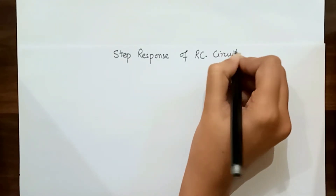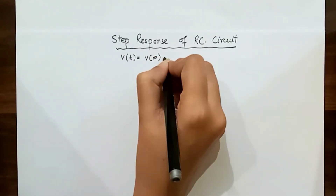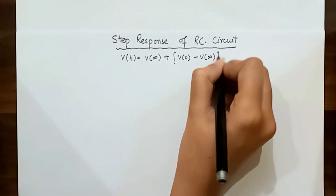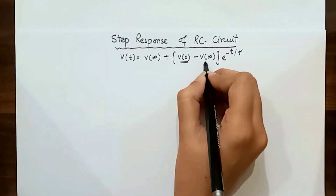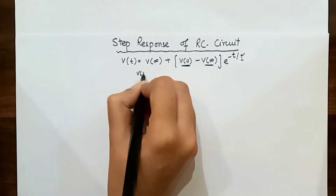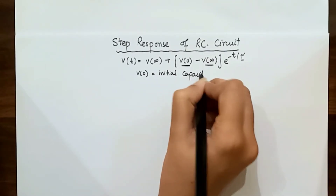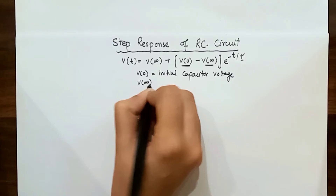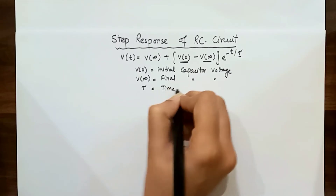Today's topic is the step response of an RC circuit. To find the step response we need this equation: V(t) = V(∞) + [V(0) - V(∞)] × e^(-t/τ). Here V(0) is the initial capacitor voltage — the voltage across the capacitor when time is zero — V(∞) is the final capacitor voltage, and τ is the time constant equal to RC.